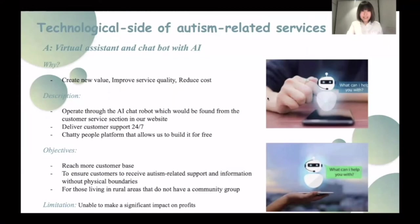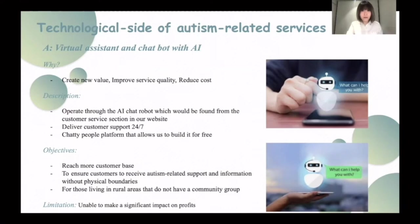We recommend ACN use a virtual assistant and AI chatbot to improve its service quality. Customers can find it through the customer survey section on ACN's website. The AI chatbot can deliver customer support 24/7, meaning customers can receive autism-related support and information without physical boundaries — especially beneficial for those in rural areas without community groups. The chatbot can also be created for free using platforms like ChattyVoice, reducing costs. However, it may not directly impact profits significantly.